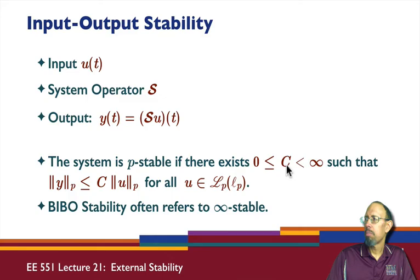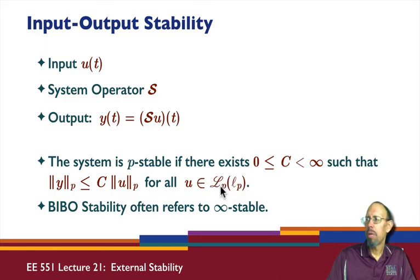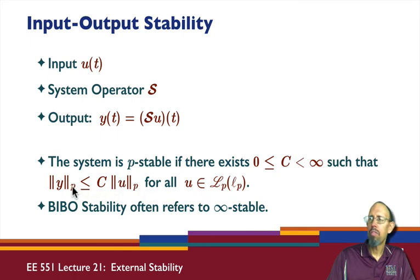This must hold for all u within the Banach space, either capital Lp or little lp — we'll talk about what this means later. BIBO stability refers to this kind of Lp-stability when p is equal to infinity. Otherwise, p can vary from one to infinity. We have a few more things to define, which we'll cover in the upcoming lectures.